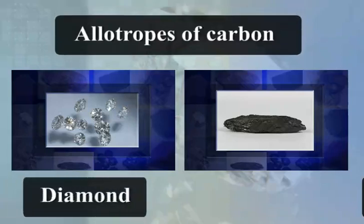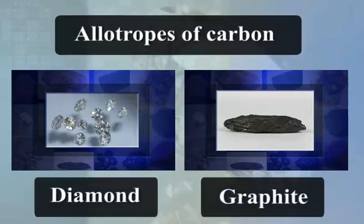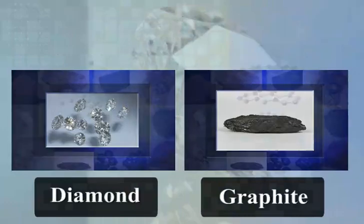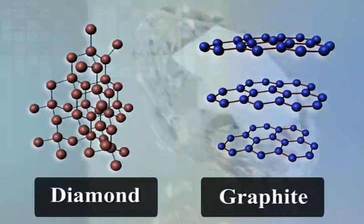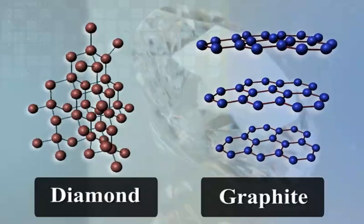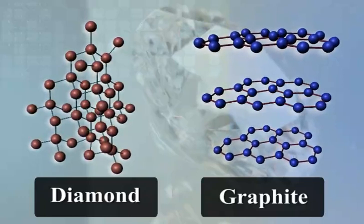Diamond and graphite are the allotropes of carbon. Both are formed by carbon atoms, but the difference lies in the manner in which the carbon atoms are bonded to one another.